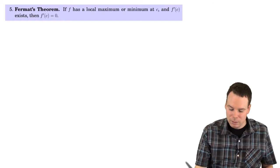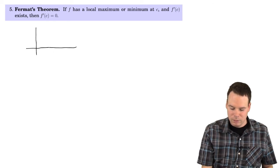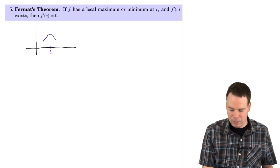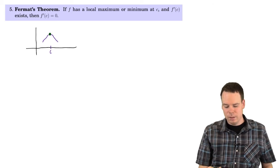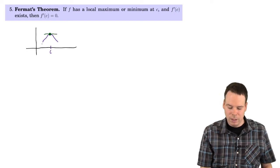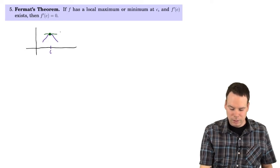If you sketch a graph, this should seem intuitively clear. We know that it has a local max — the function is going up, it turns around at c, and then it comes back down. So there's our local max. And if we look at what the tangent line should be, well, it should be horizontal. It had to go up and turn around to come back down in order for that to be a local max. So the tangent line has slope 0.